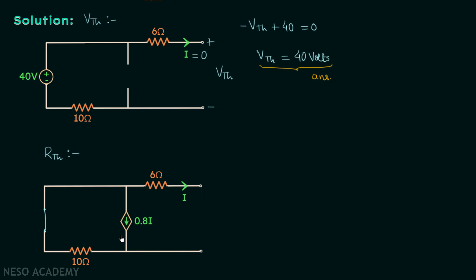We can see that the 10 ohm resistor is in parallel with the 0.8I dependent source. We are stuck here because we have a resistor in parallel with a dependent source, not a simple series or parallel resistor combination. To deal with this problem, we will connect one independent source between these two terminals — it can be a voltage source or a current source. I will connect a voltage source and assume its rating to be one volt, for simplicity.